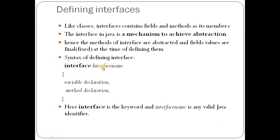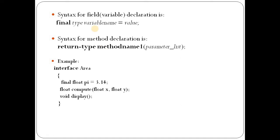The interface name can be any valid Java identifier. The data field syntax starts with keyword final, then the data type, then the name of the data field, and you must initialize it. Unlike a class, initialization of an interface data field is mandatory, and the final keyword is also mandatory. For interface methods, you can't define them but must declare them. The declaration specifies return type, name of the method, and parameters if required.